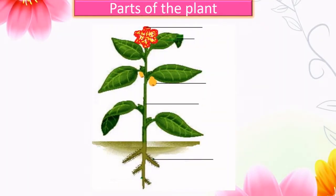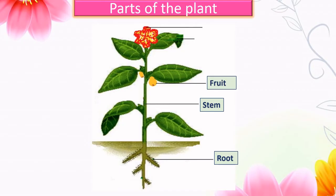Parts of plants: root, stem, fruit, leaf, and flower. Let us see the function of each part in detail.